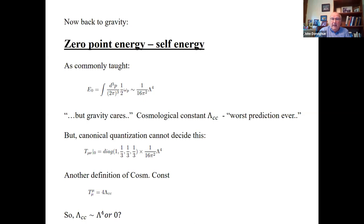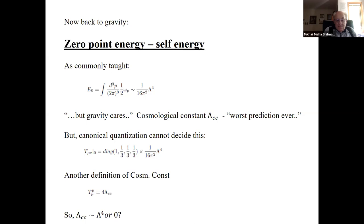If you quantize the whole energy-momentum tensor, you get something whose lambda — the T00 piece — is traceless. Another definition of the cosmological constant is the trace of the energy-momentum tensor, either the vacuum energy or the trace. Those are equivalent in a Lorentz-invariant description, but canonical quantization gives you divergences that can't be changed by any counterterms in a covariant field theory. So it's a bit ambiguous what the real answer is.